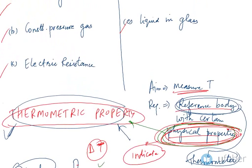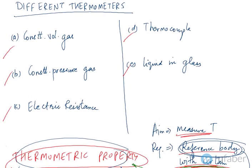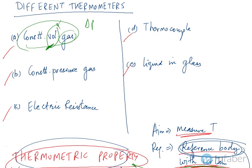Going up to the slide, I have listed some thermometers that we normally use. The first is the constant volume gas thermometer, where the reference body is a gas. Since the volume does not change, volume will not indicate a change in temperature. So what indicates the change is the pressure — the change in pressure of the gas is the thermometric property for this thermometer.